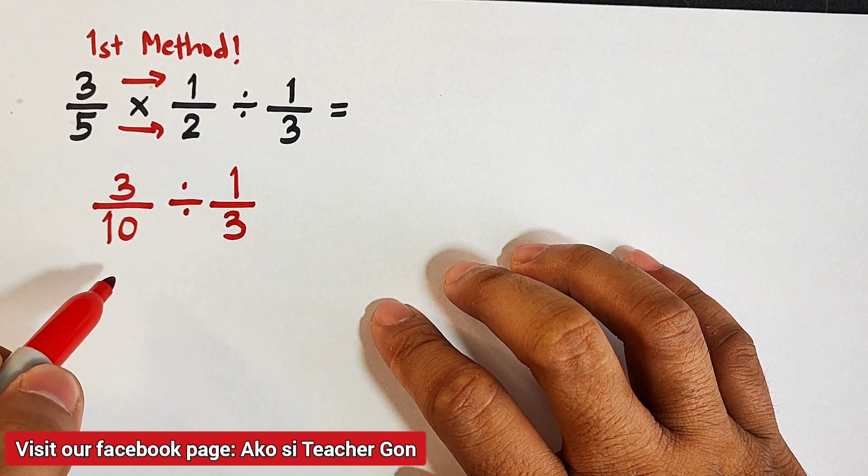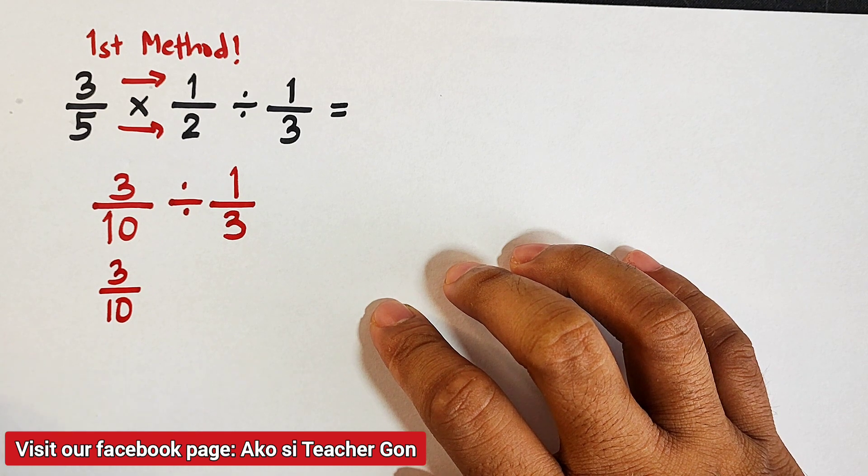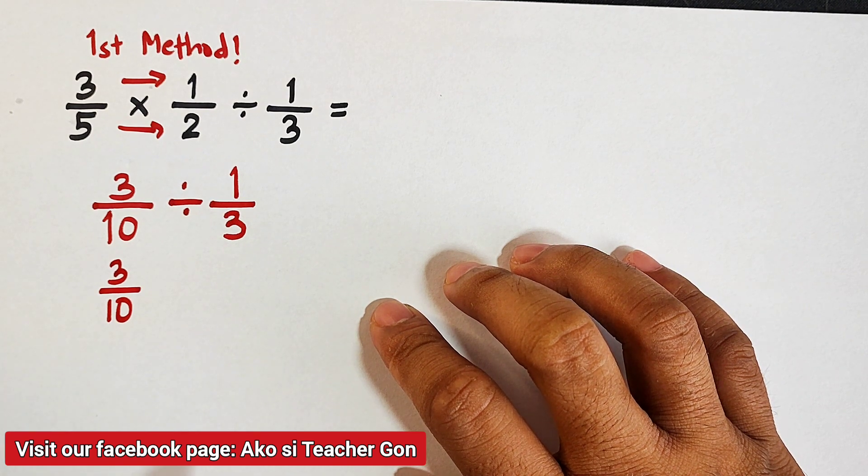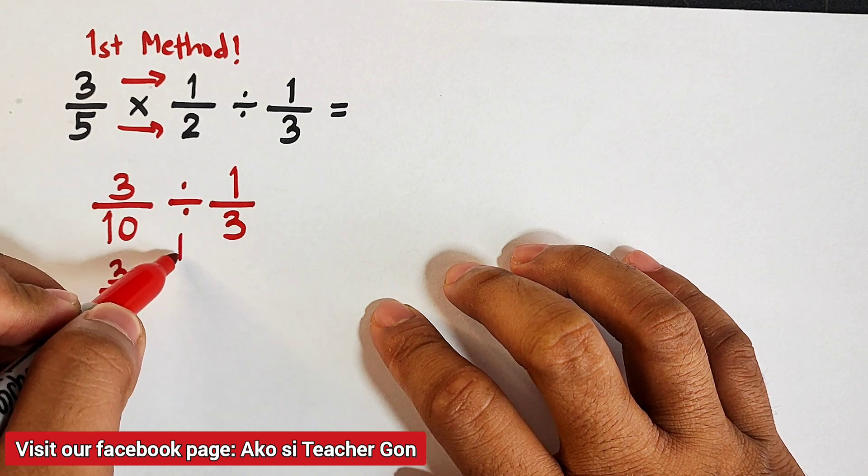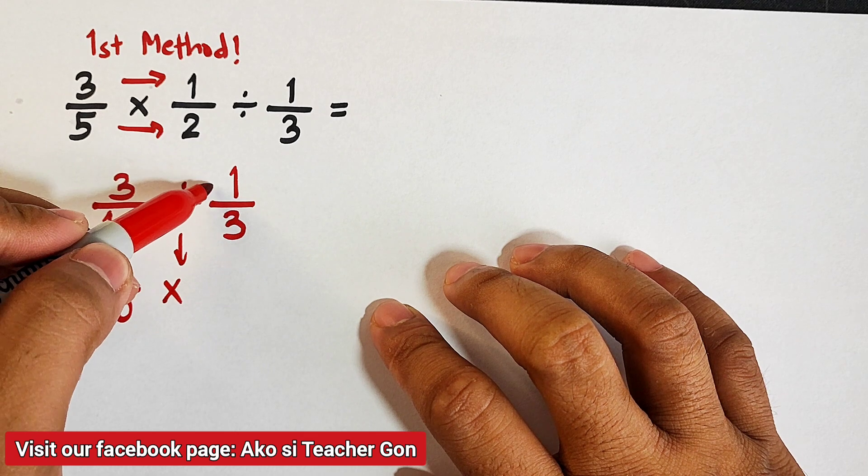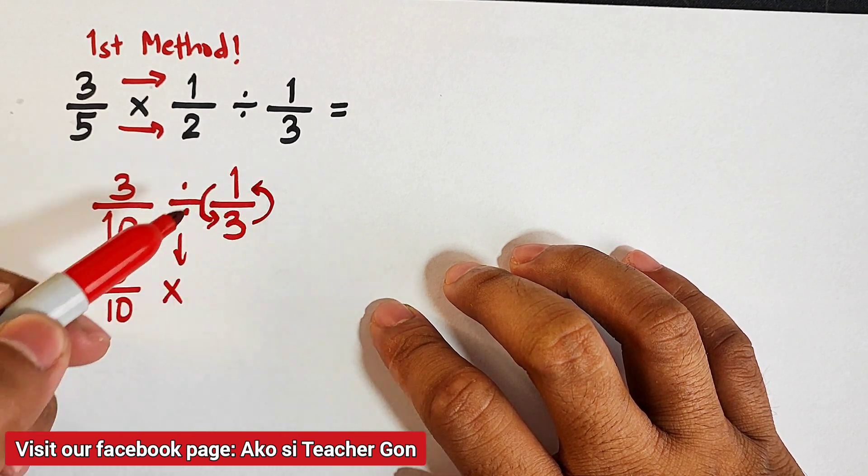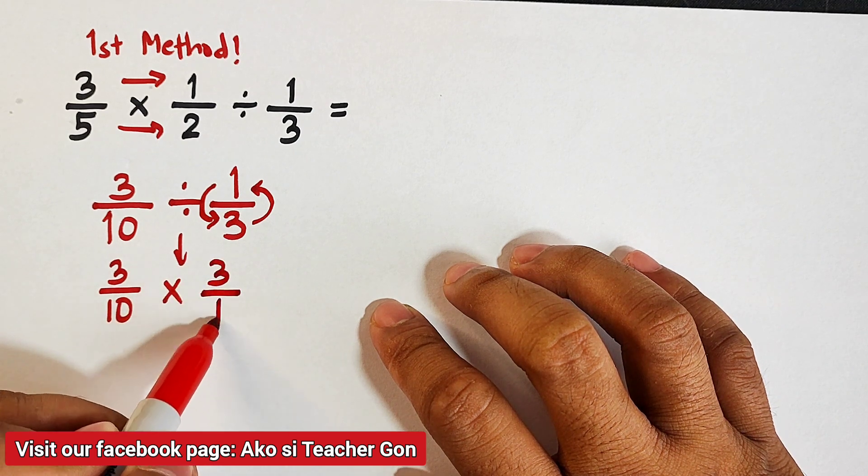This is 3 over 10. And in dividing fractions, it will lead you to multiplication. So we will change this operation from division to multiplication. Then after that, we will get the reciprocal of the divisor or the one-third, which is 3 over 1.